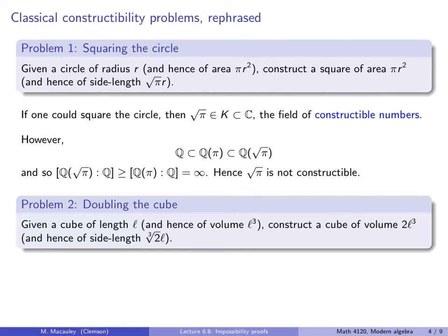Formally, this says, given a cube of side length l, and hence of volume l cubed, construct a cube of twice the volume. In other words, 2 l cubed. Therefore, the side length has to be the cube root of 2 times l.